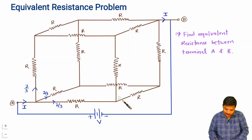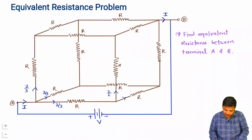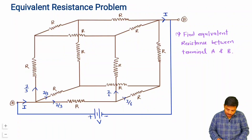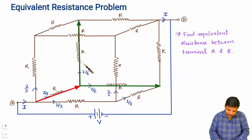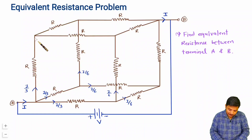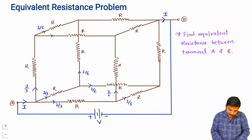Each I/3 current arriving at the intermediate nodes gets divided in half again. So each of the two resistors connected from those nodes carries I/6. This happens at all three intermediate nodes — the I/3 splits into I/6 and I/6 in each case.